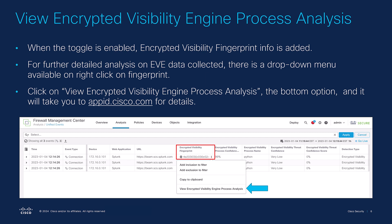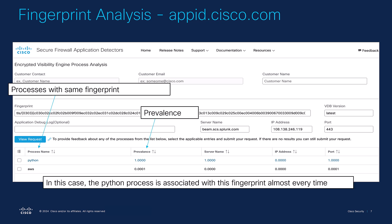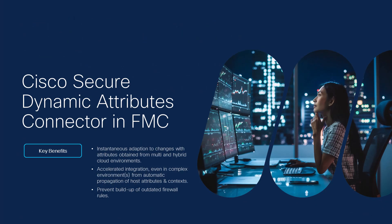The third ability is enhanced analytics in the unified event viewer, where users can get detailed TLS fingerprint information from connection events by clicking on 'View Encrypted Visibility Engine Process Analysis.' This takes them to app ID where they can see processes with the same fingerprint, its prevalence, and submit feedback to improve detection efficacy. The fourth ability is the new Packet Tracer cross-launch feature, which loads connection details from the unified event viewer page into Packet Tracer to simplify capture sessions.